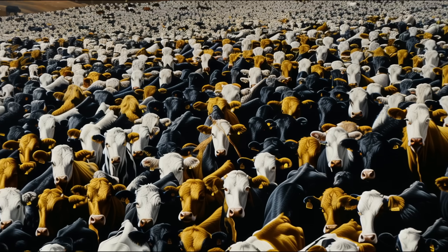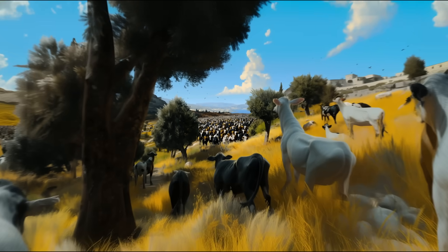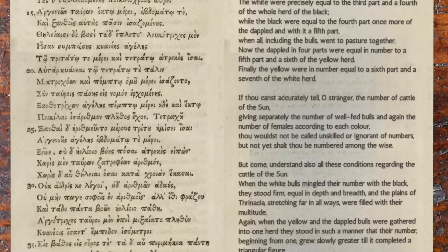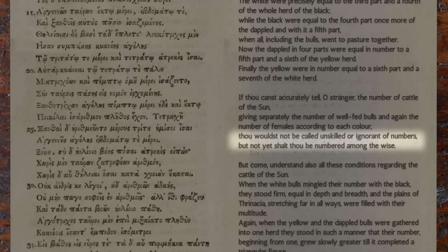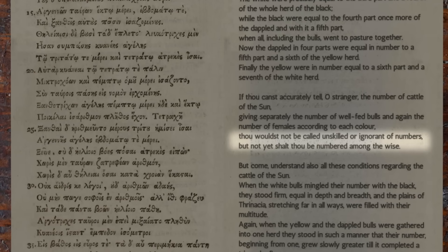If thou canst accurately tell, O stranger, the number of cattle of the sun, giving separately the number of well-fed bulls, and again, the number of females according to each color, thou wouldst not be called unskilled or ignorant of numbers, but not yet shalt thou be numbered amongst the wise.